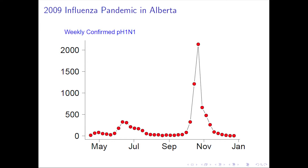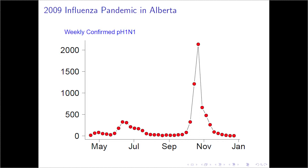This occurred around the world, and one place where we have data for it is in the province of Alberta. What's shown here is weekly cases of laboratory confirmed cases of pandemic influenza in the province of Alberta. The pattern is quite interesting: it started in late April and took off, and there was a peak in June, but then it trailed off and nothing seemed to be happening. And then there was a big outbreak again in the fall. Why would that happen?